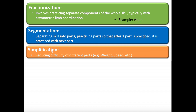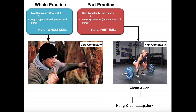The next type is simplification — this one is fairly obvious. If you want to do simplification, you're just going to reduce the difficulty of different parts. For example, you could reduce the weight, or if something is a speed-type activity, reduce the speed. For the clean and jerk, you would simply decrease the weight, which would make it easier. This is especially important because doing this movement with incorrect form can cause injury, whereas correct form maximizes efficiency. Simplification — lower the weight, lower the speed, do something to make the movement easier. That's a type of part practice.